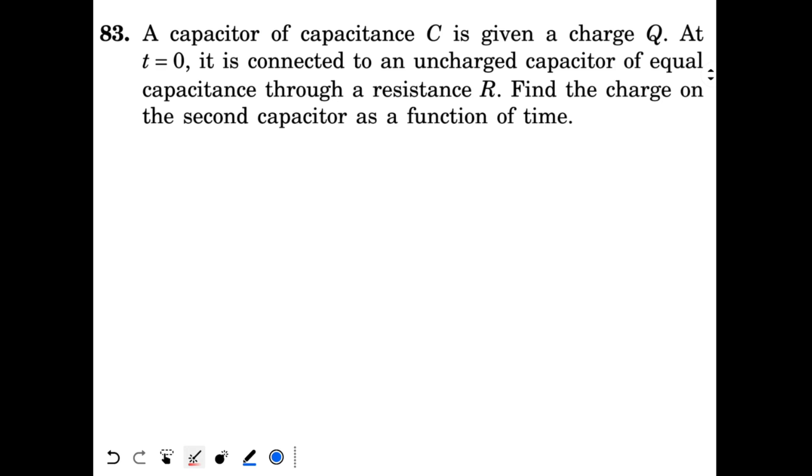Okay, so this is question 83 from chapter 32 of H.C. Varma. A capacitor of capacitance C is given a charge Q at t equal to 0. It is connected to an uncharged capacitor of equal capacitance through a resistance R. Find the charge on the second capacitor as a function of time.